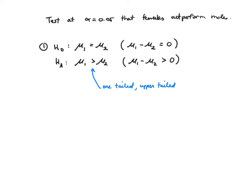We also ask at this stage whether our assumptions hold. Do we have a large sample? In this case, we need n1 > 25 and n2 > 25. N1 is 33 and N2 is 60, so both are good — both pass our bar for being classified as large. We will continue on.